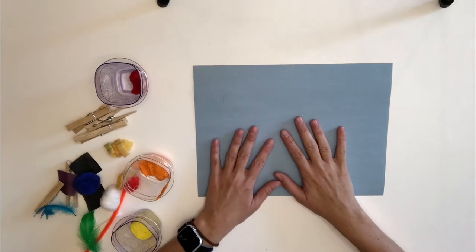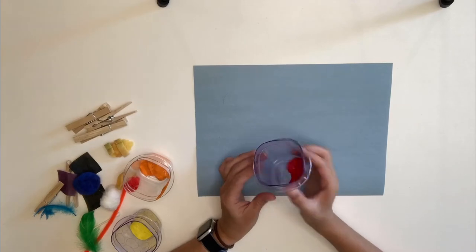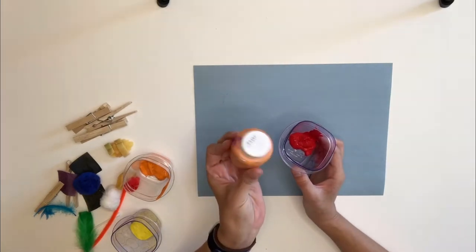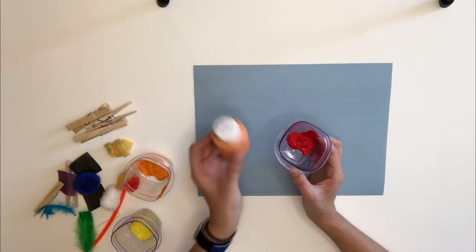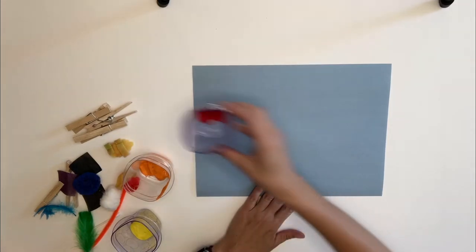Now that we have all of our materials, we're ready to get started. So the first thing that we need to do is we need to make sure that we put some paint in some little containers. Because it's really hard to get our paintbrushes into our big containers, right? So I want you to make sure that you put some paint in the little containers.